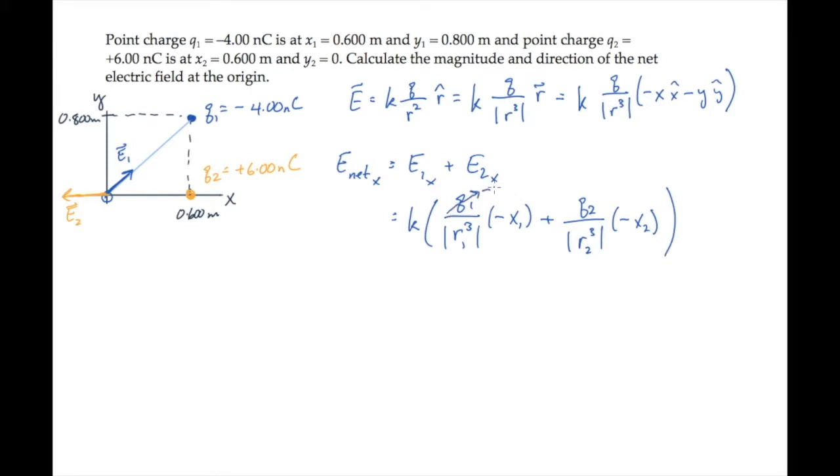The problem statement gives us the value of each charge, so we can substitute those. We know the Coulomb constant k, I'll write its value here. We know that charge 1 is located at x equals 0.6 meters, and charge 2 is at the same x value.